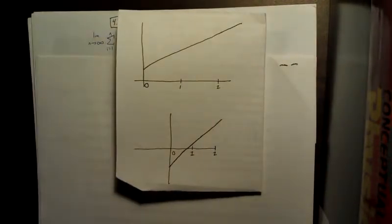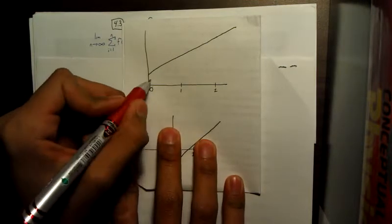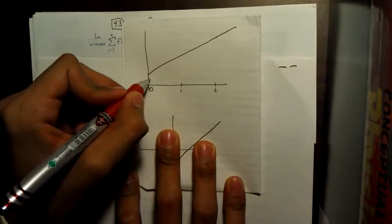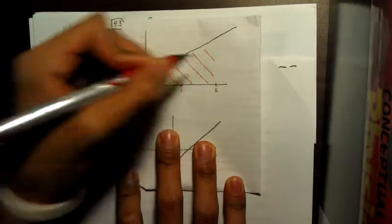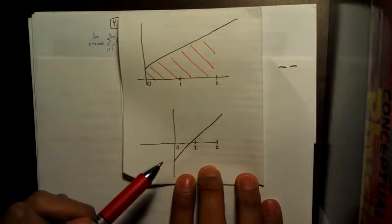All right. 4.3 deals with Riemann sums and definite integrals. This is pretty similar to 4.2, except in 4.3 it takes into account if the graph goes below the x-axis. So if you see here, this top graph would be like what you would have found in 4.2. However, this bottom graph would be 4.3, what I'm going to present.